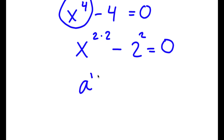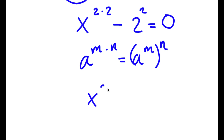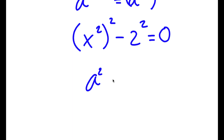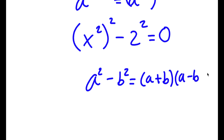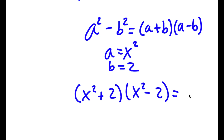Now if I have something in the form a to the power of m times n, this is the same thing as a to the power of m to the power of n. So x to the power of 2 times 2 I can rewrite as x to the power of 2 to the power of 2, minus 2 squared equals 0. Now if I have something in the form a squared minus b squared, this equals a plus b times a minus b. So here, a is x squared and b is 2, giving me x squared plus 2 times x squared minus 2 is equal to 0.